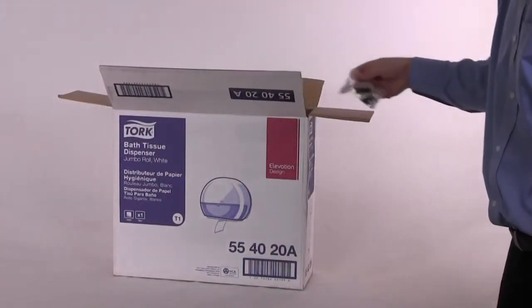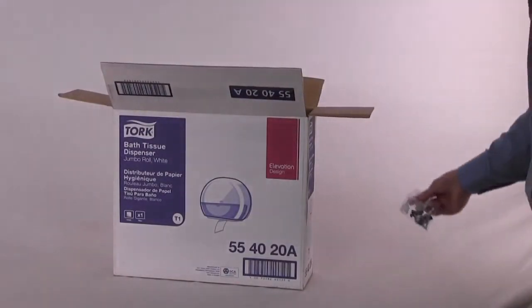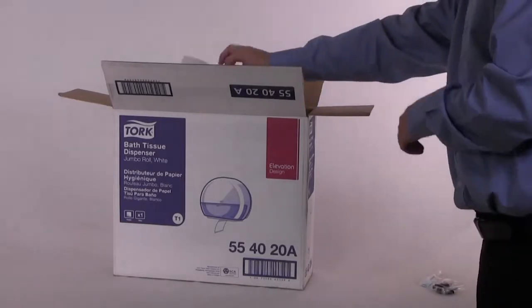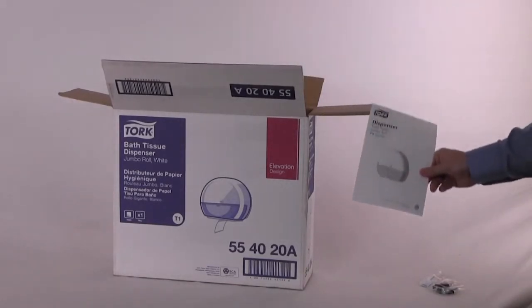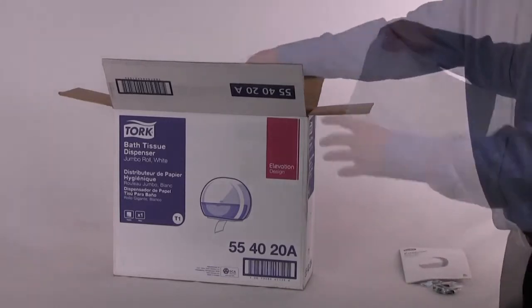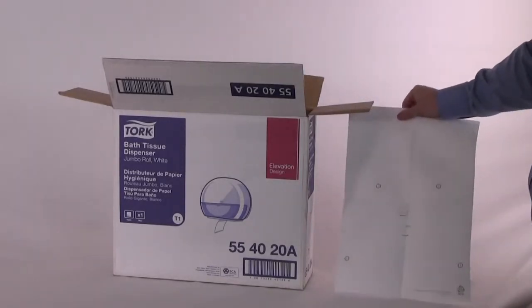Each Tork Elevation Jumbo bath tissue roll dispenser comes individually packed with a standard Tork key, mounting hardware, operating instructions, and an installation template.